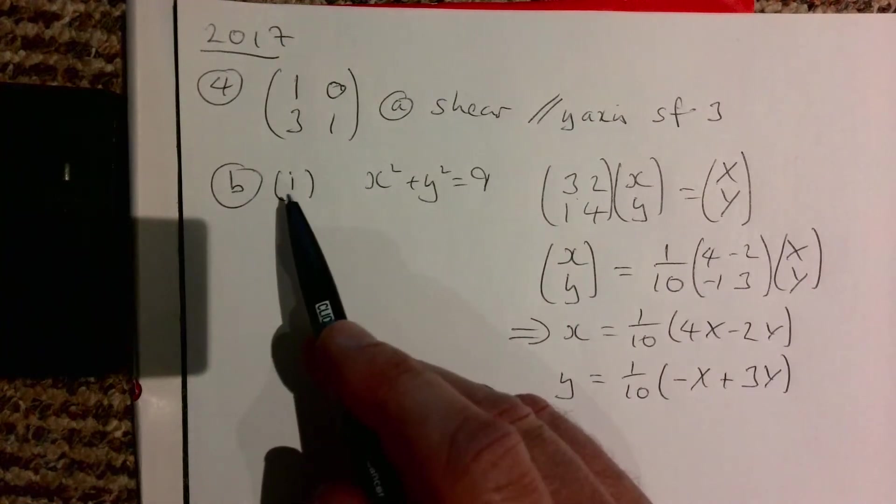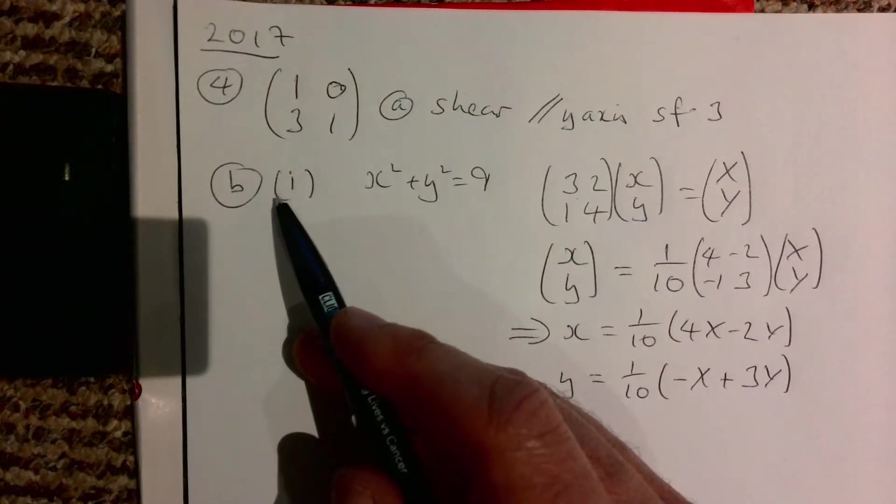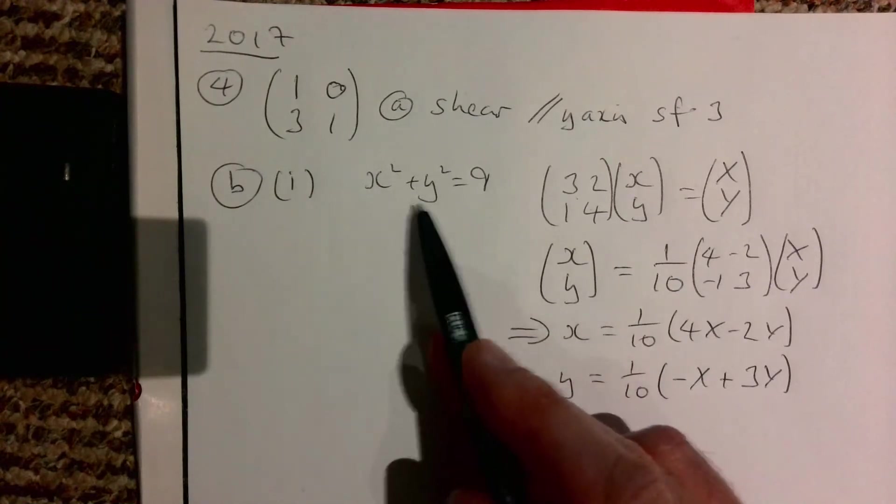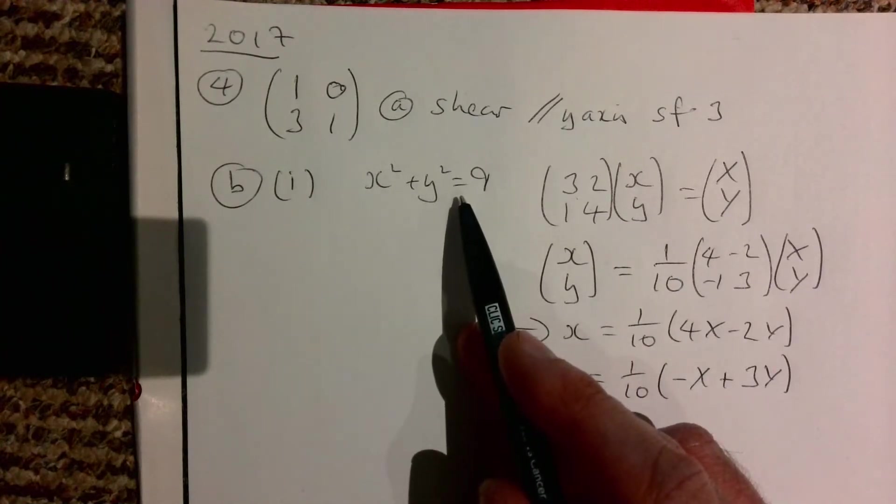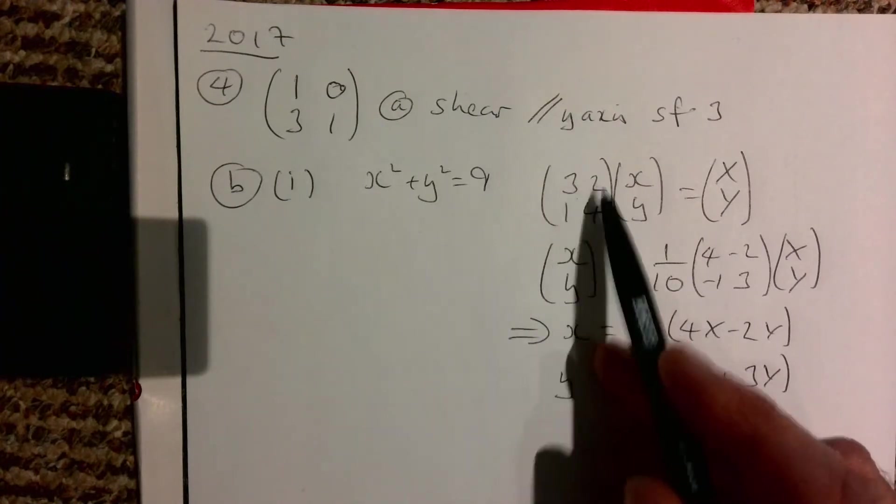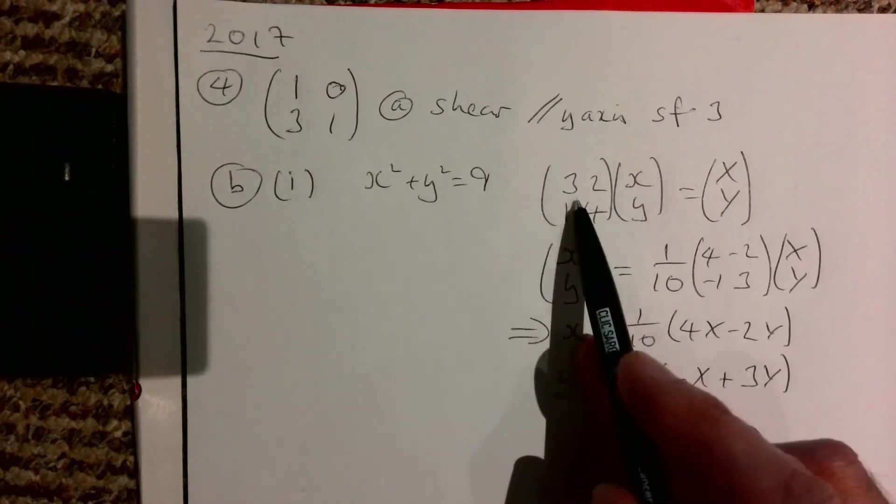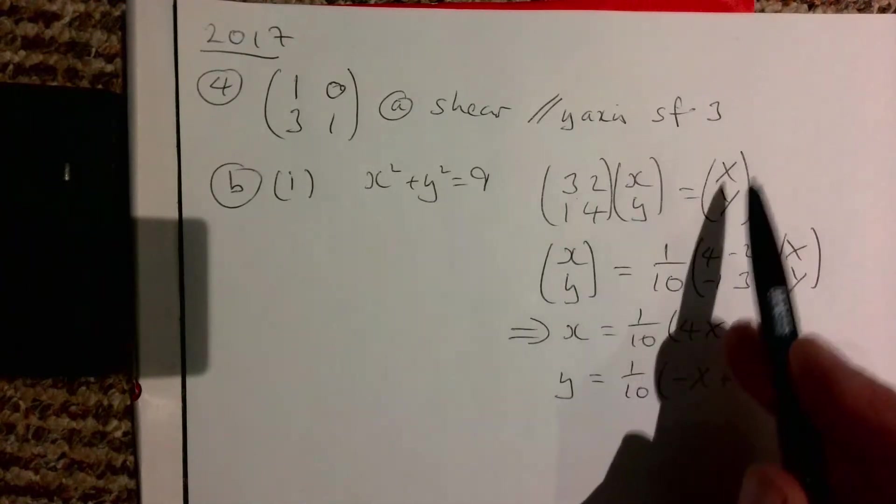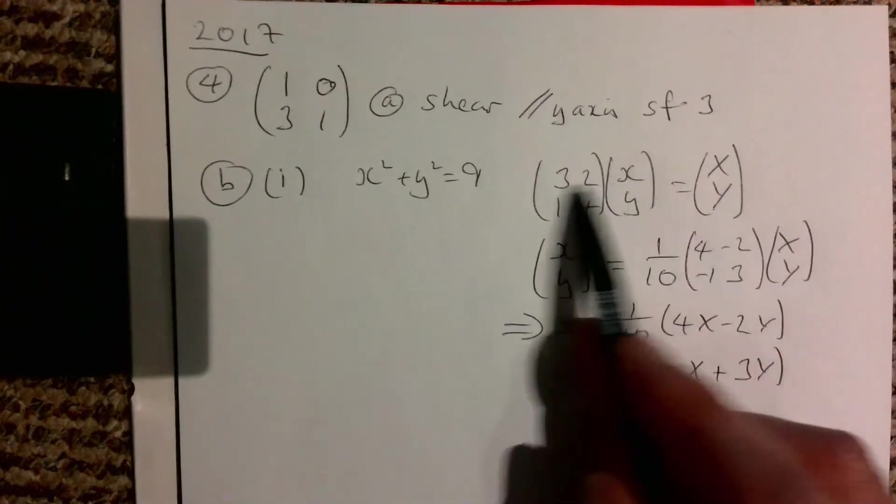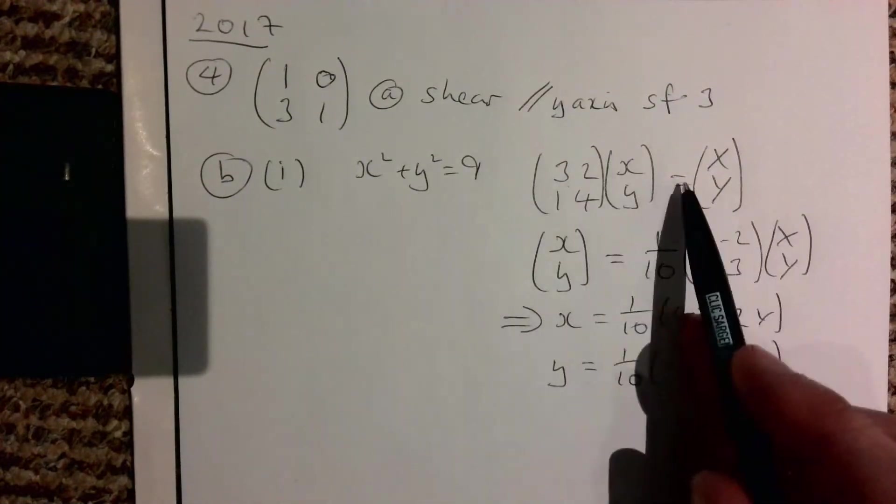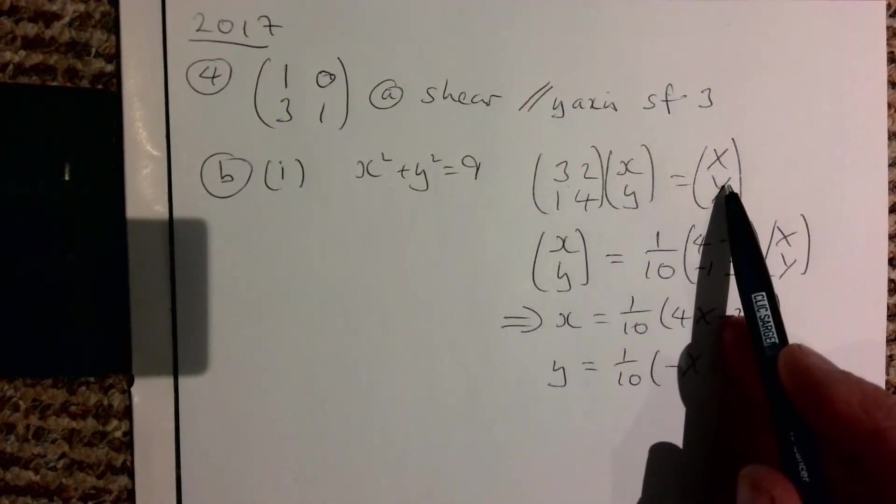Okay, so that's part a. Part b says find the image of the circle x² + y² = 9 underneath the transformation represented by the matrix (3 2; 1 4). So every point on this circle is being put through this and it comes out then and gives us a new shape.